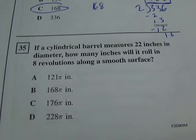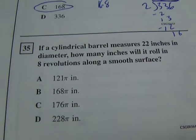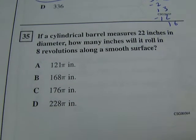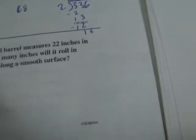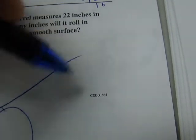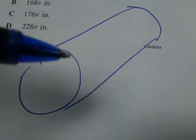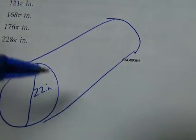Next one, number 35. If a cylindrical barrel measures 22 inches in diameter, how many inches will it roll in 8 revolutions along a smooth surface? So we've got our cylindrical barrel. That means it makes a cylinder. And the diameter is 22 inches.